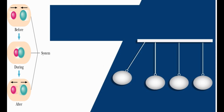Different kinds of collisions produce different results. Sometimes the objects stick together. Sometimes the objects bounce apart. What is the difference between these types of collisions? Is energy conserved as well as momentum?